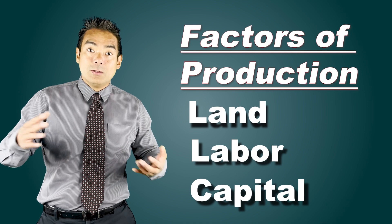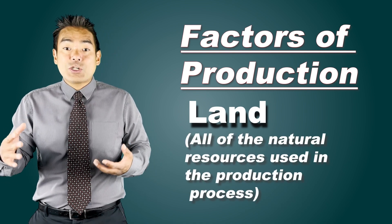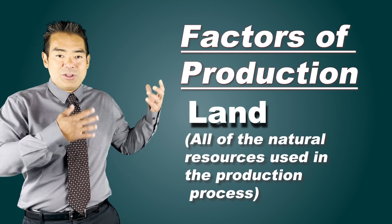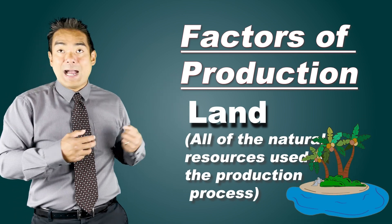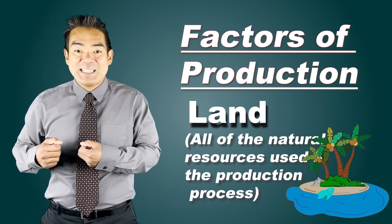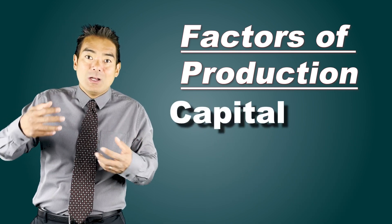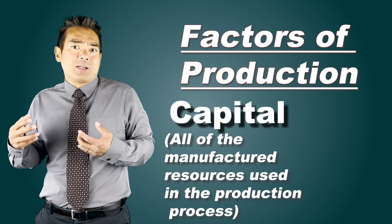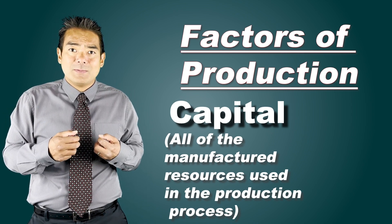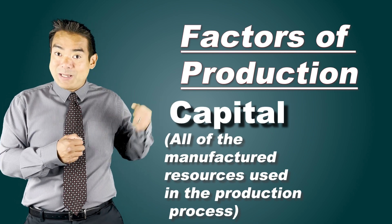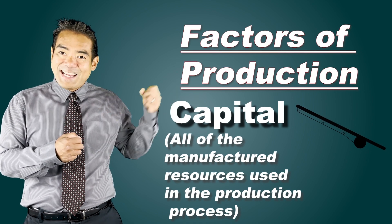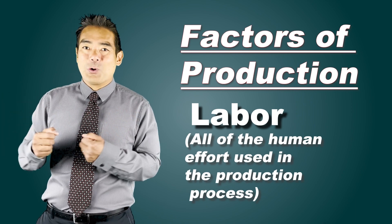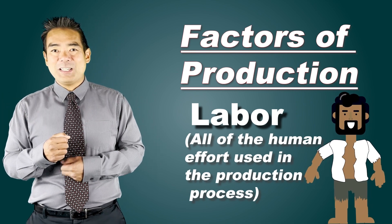Land is all of the natural resources available on the island — the trees, the coconuts, and the fish in the sea. Capital is all of the man-made resources used in the production process that require some sort of upfront investment or commitment. On our island, the capital would be the fishing pole and the basket. And finally, the labor is yours truly — the castaway economics teacher.